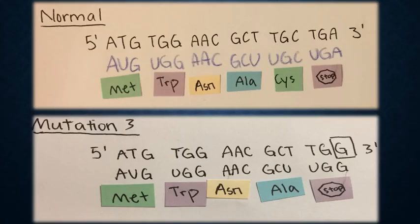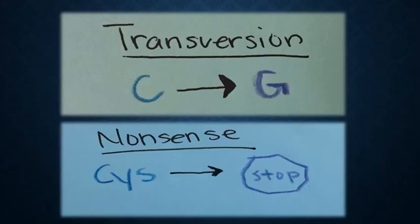For our third mutation, we can see that a cytosine in the normal strand is mutated to guanine. We can also see that the codon TGC in the normal strand, which transcribes to UGC, translates to the amino acid cysteine, which is different from the codon TGG in the mutant strand, which transcribes to UGG, which is a stop codon. This is a transversion mutation because a pyrimidine is changed to a purine. This is a nonsense point mutation because the codon that codes for the amino acid cysteine is mutated to a stop codon.